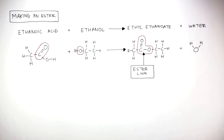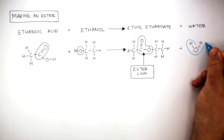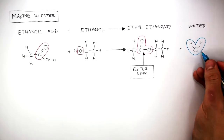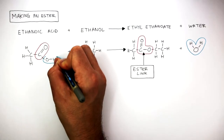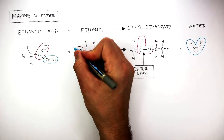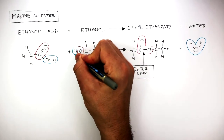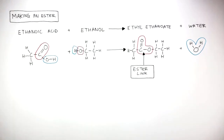Using a different color, here I'm drawing around the water molecule to show how the OH from the ethanoic acid forms a covalent bond with the hydrogen atom on the ethanol to form a water molecule.